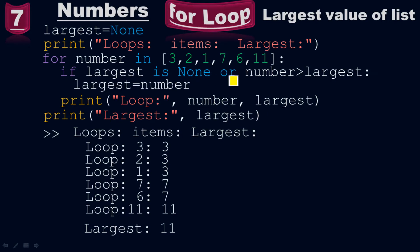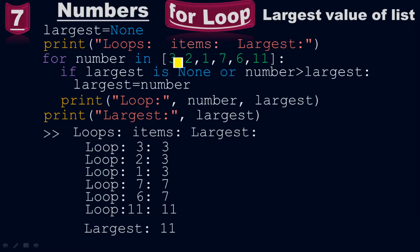I have used the OR logical operator here. If largest is none OR number is greater than largest, then largest equals to number. For the OR logical operator, at least one term should be true. When you look at the first term — largest is none — it is true, because we said largest equals to none. The for loop will iterate each and every single number step by step, identifying the largest value.